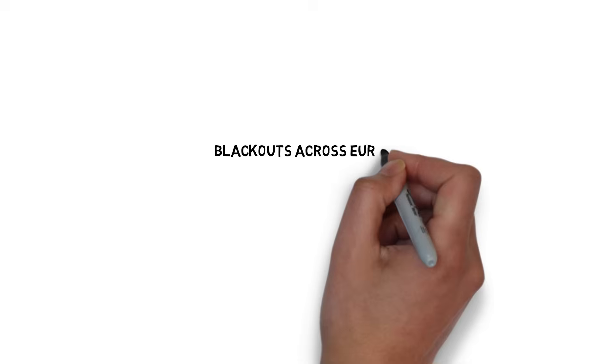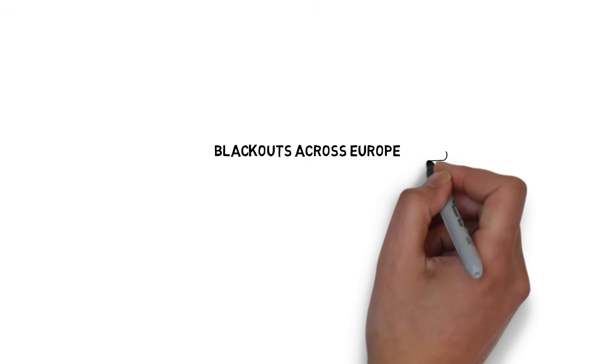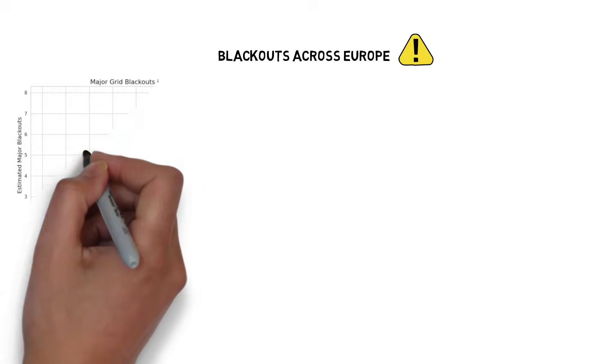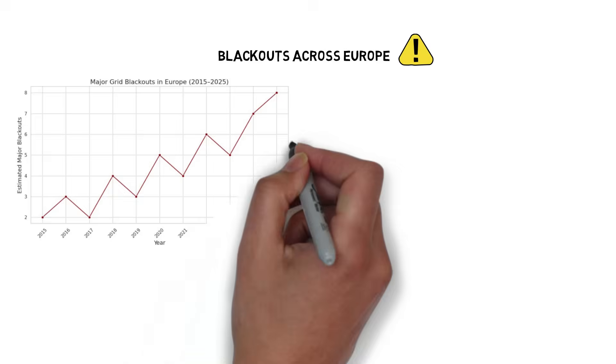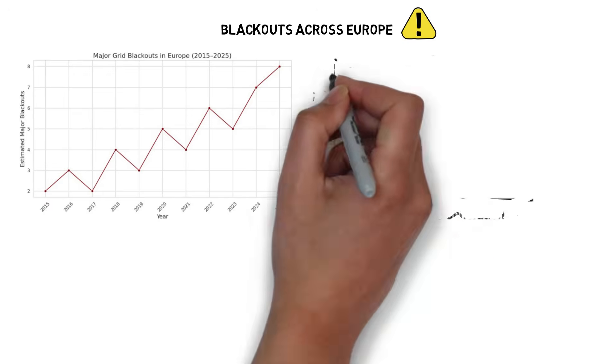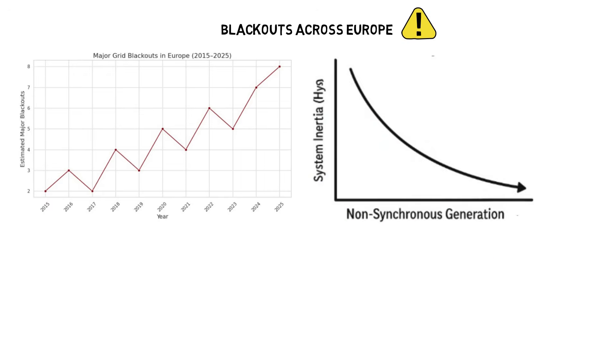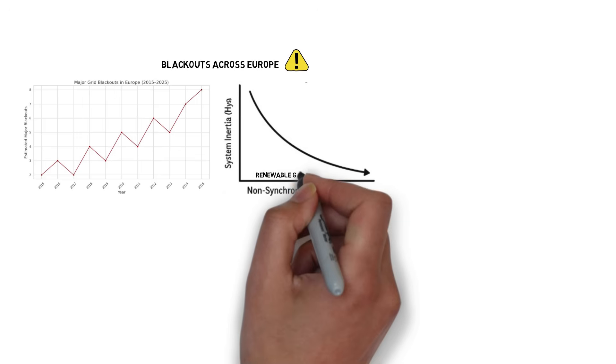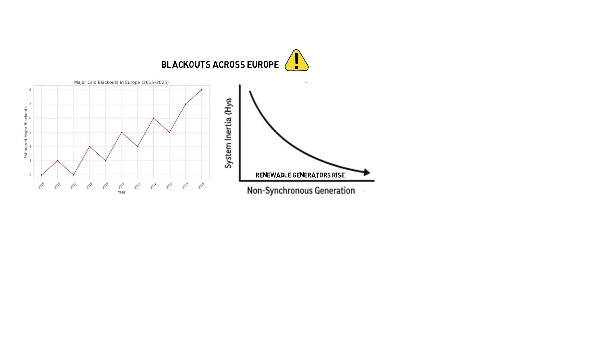Across Europe, the trend is unmistakable and alarming. Since 2015, the number of grid blackouts has surged year after year. As vast waves of non-synchronous solar and wind power flood the system, the backbone of stability, inertia, has been steadily eroded.